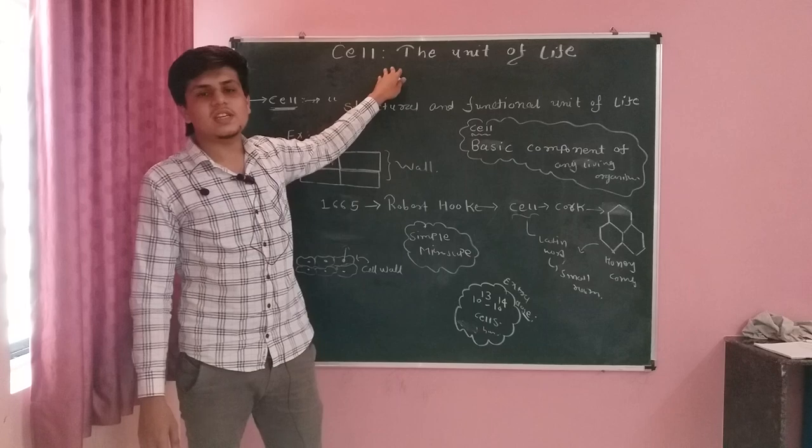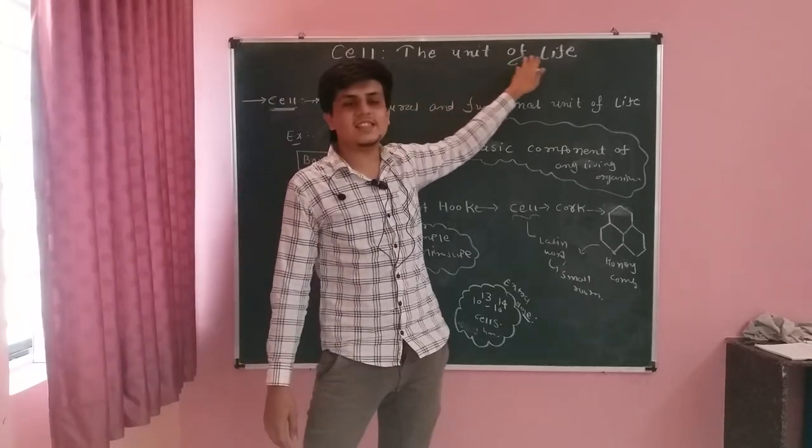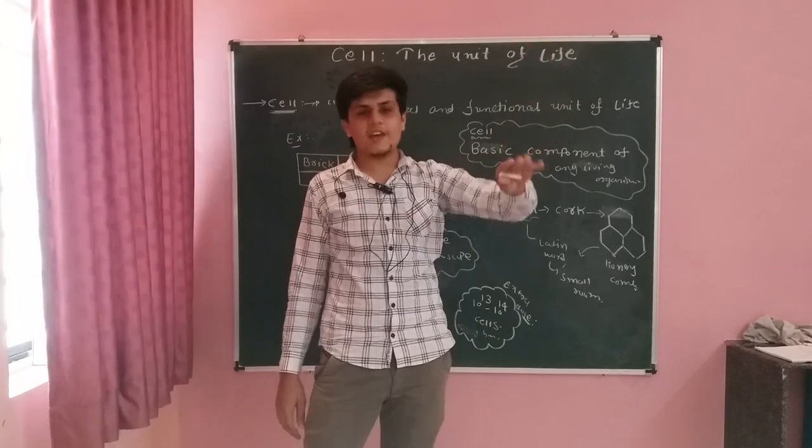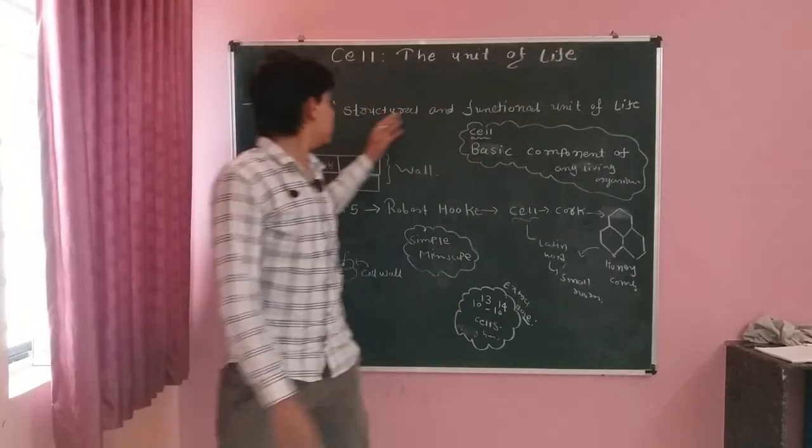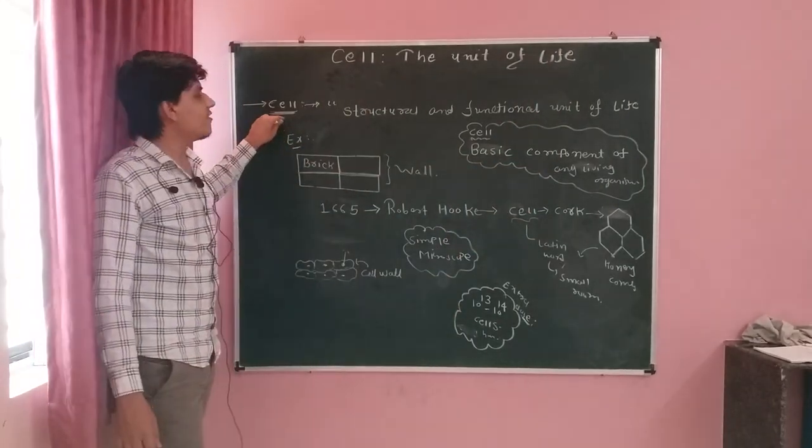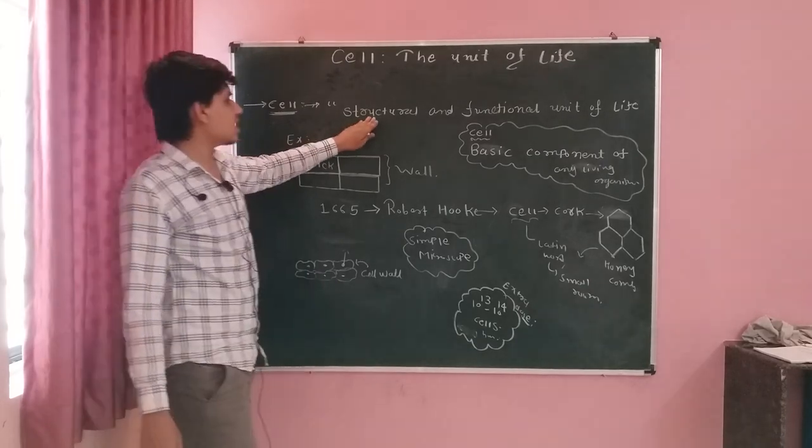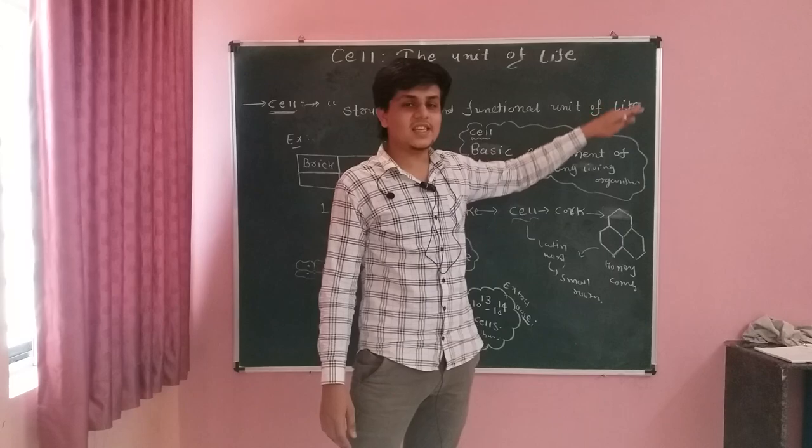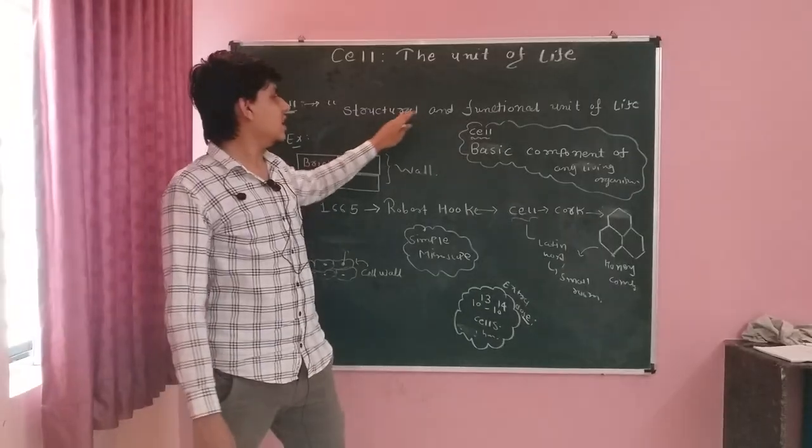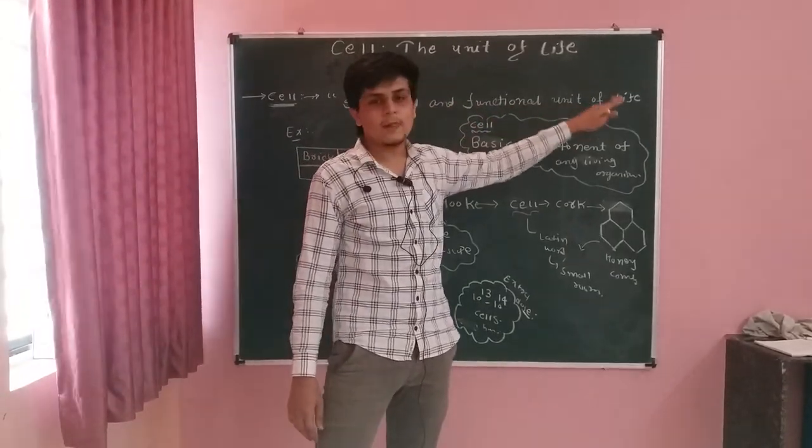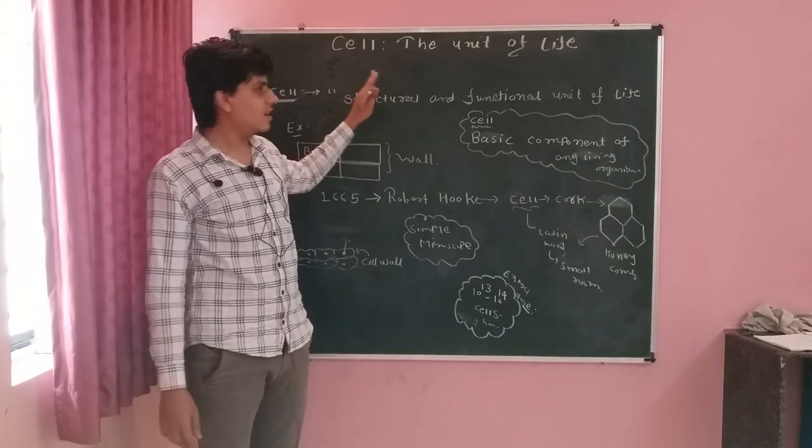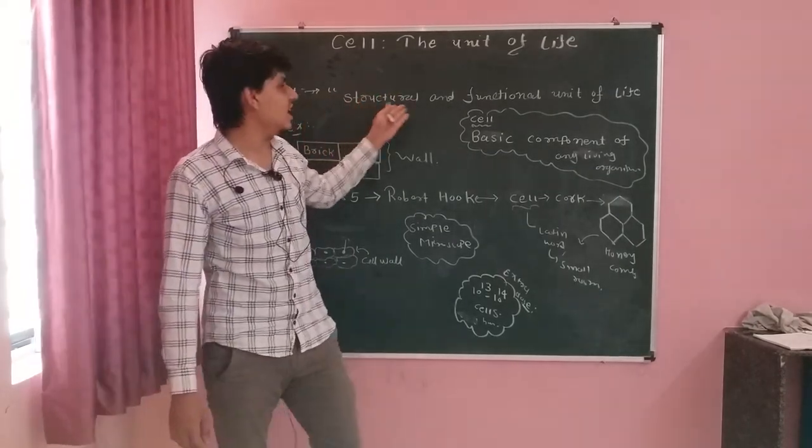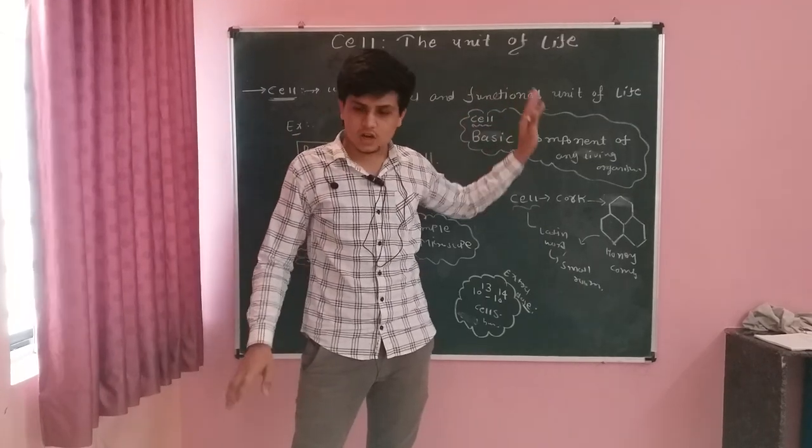As we know, the cell is the unit of life. As the name suggests, the unit of life. Now let's go to the definition of the cell. The definition of the cell is the structural and functional unit of life. Once again, the structural and functional unit of life is called cell. Now you have understood that the structural and functional unit of life is called cell.